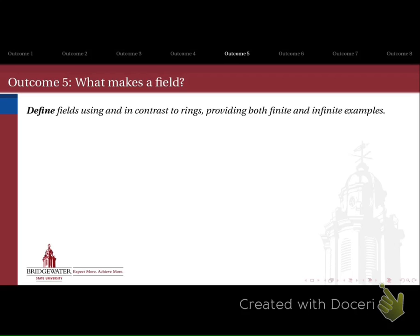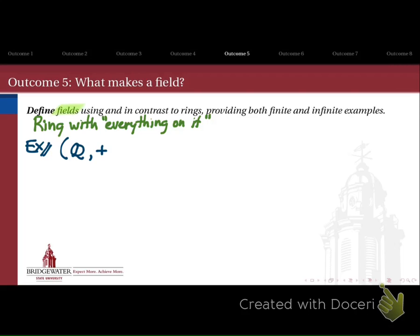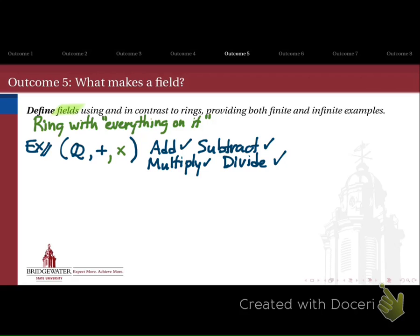Outcome number five puts the icing on the cake and takes rings and extends them to fields. We want to define fields using and in contrast to rings, and provide examples both finite and infinite. A field is just a ring with everything on it — every possible property that could make all the arithmetic we take for granted work will be present. The classic example is the rationals: they form a ring, but we can also divide any rational number by another rational number and get a rational number, with the one exception that we can't divide by zero.